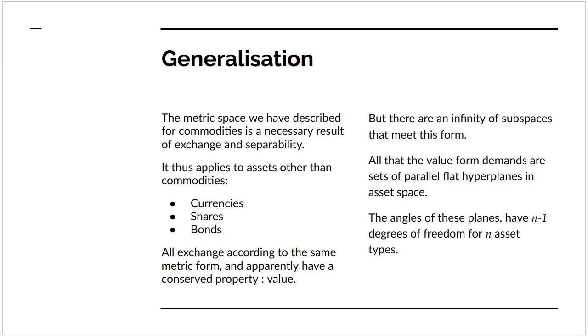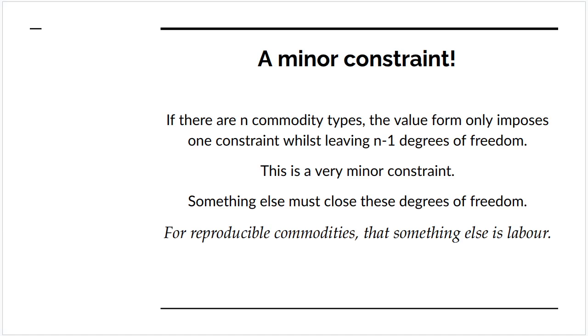This is something you'll come across in a slightly different formulation if you read the Ricardian Marxist literature on prices. So in effect, the value form is a minor constraint. A lot of fuss is made about it, but it's actually a minor constraint.